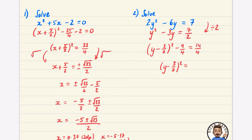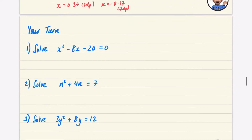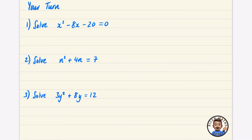Converting 7/2 to quarters gives 14/4, so (y − 3/2)² = 14/4 + 9/4 = 23/4. Square rooting both sides: y − 3/2 = ±√23 / 2. Adding 3/2 gives y = 3/2 ± √23/2, or as a single fraction, y = (3 ± √23) / 2. You could write this in decimal form unless exact form is required. I've got three questions for you to have a go at — pause the video and try them.